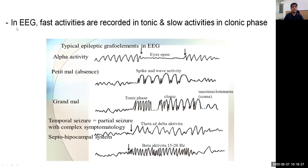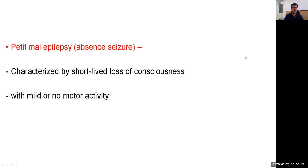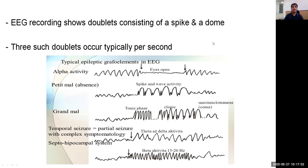In the EEG, fast activities are recorded in the tonic phase and slow activities in the clonic phase. Petit mal epilepsy, also called absence, is characterized by short-lived loss of consciousness of very brief duration with mild or no motor activity, hence the term absence. The EEG recording shows complexes consisting of a spike followed by a wave, occurring typically at 3 per second.